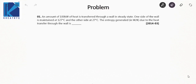Hi, in this video I'll be solving previous year questions from the subject thermodynamics, and the chapter will be the second law. So the first question is: an amount of 100 kilowatt of heat — underline this, 100 kilowatt — is transferred through a wall in steady state.